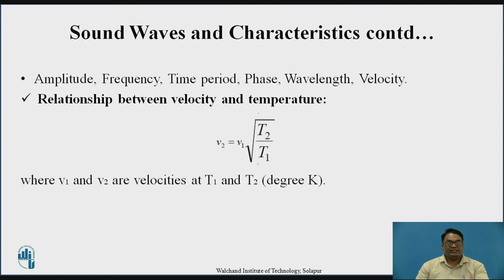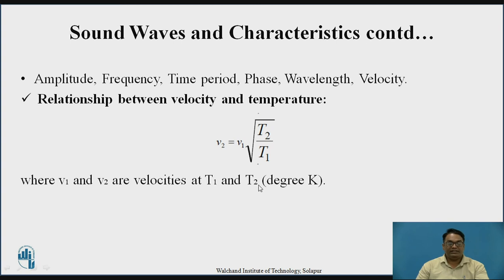Amplitude, frequency, time period, phase, wavelength, and velocity can be correlated using the relationship between velocity and temperature, given by: V2 = V1 × √(T2 / T1), where V1 and V2 are the two different velocities for two different temperatures T1 and T2. Here there is a change in medium, hence the velocities and temperatures differ.